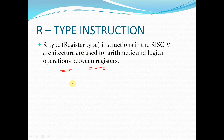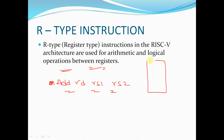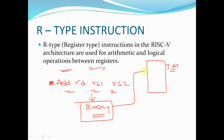Before discussing R-type, let us look at how instructions are stored. When we write any instruction — for example, add rd, rs1, rs2 — this instruction will be stored in a memory called instruction memory. It is first converted into binary, and that binary number is stored in instruction memory.